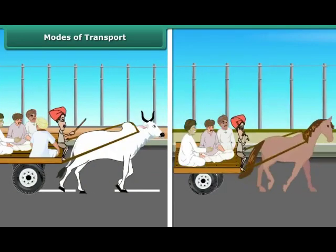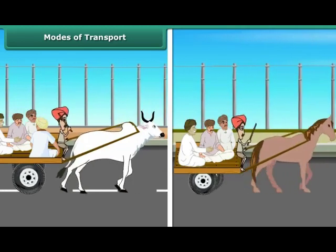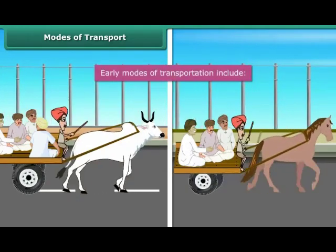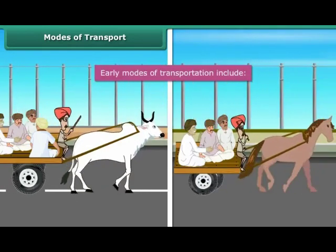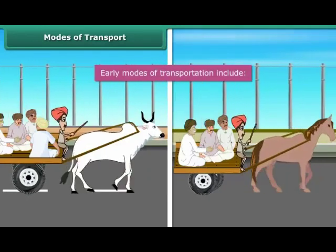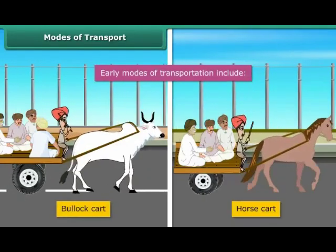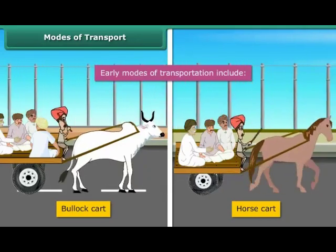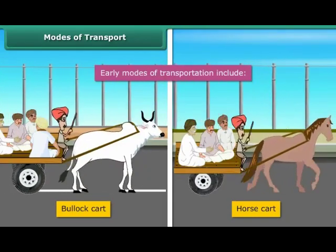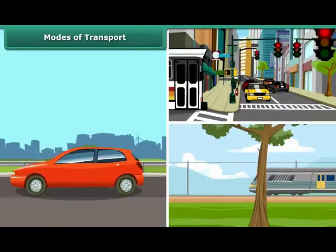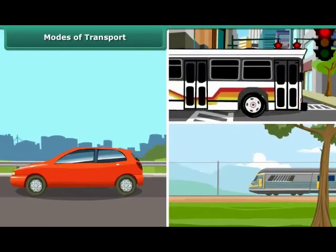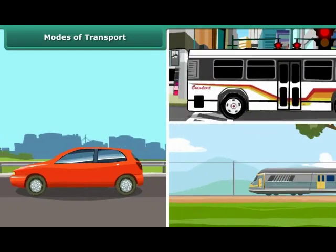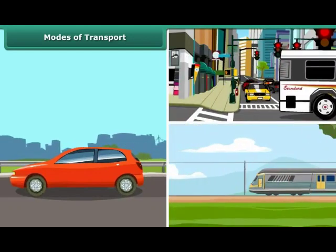Modes of transport. Have you wondered how people travelled in the earlier days? In the early days, people have always used animals to travel from one place to another. For example, bullock cart, horse cart, etc. Can you imagine using a bullock cart to come to school every day now? Nowadays, we have progressed and we have learned we can use fuel and natural resources to create better modes of transport.